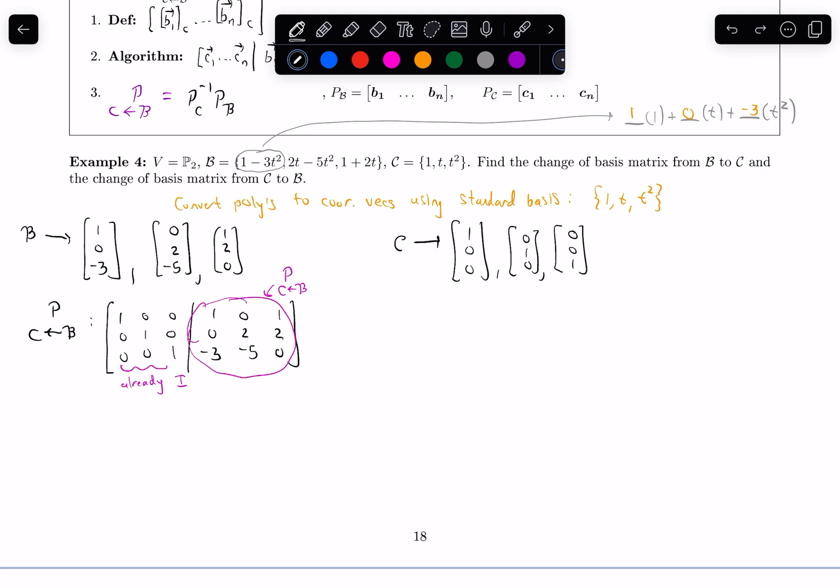All right, so let's do the more interesting one, the harder one. What if I had to do it the other way around? So convert from the C basis vectors to the B basis vectors. So now using this notation, I put the B basis vectors on the left of the augmented bar. So 1, 0, negative 3, 0, 2, negative 5, 1, 2, 0.